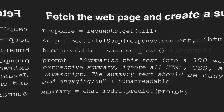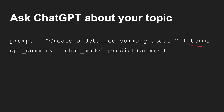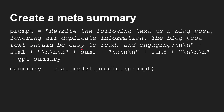You can collect all these different bits of data together, and also add in a fourth one: 'Create a detailed summary about [terms]' — where terms is what you've typed in at the keyboard, so 'custard pies'. You run the model and it gives you back that summary too. Then to create the final meta summary, you use a prompt like: 'Rewrite the following text as a blog post, ignoring all duplicate information. This post should be easy to read and engaging.' You feed in summary one, summary two, summary three, and the GPT summary, and you get back the final meta summary. The only thing to watch out for is the number of tokens — if you've done a lot of searching and you've got a lot of text, the prompt might be too long. If you're using GPT-4 Turbo, in my experimentation that's not a problem.